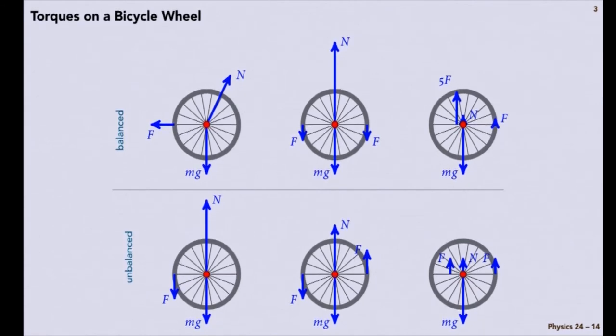And then a third example here. We can have a very strong force put very close, balancing against. And that one would tend to want to make the wheel turn clockwise.